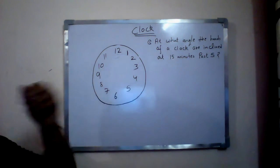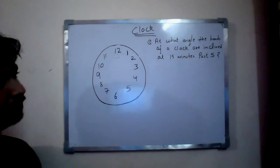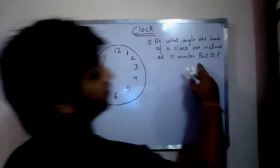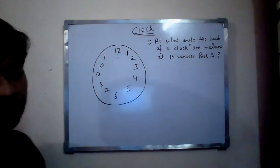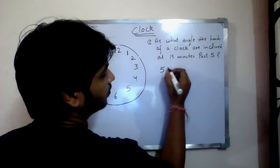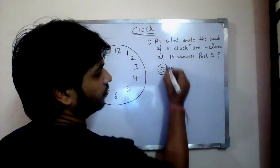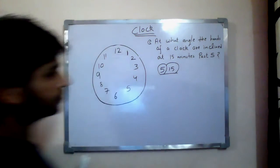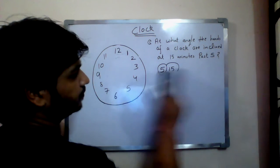Let's start. First, let's understand the question: at what angle are the hands of a clock inclined at 15 minutes past 5? He is asking us that when the clock shows 15 minutes past 5 — meaning after 5, 15 minutes more, that is 5:15 — we have to find out the angle between the hour hand and minute hand.